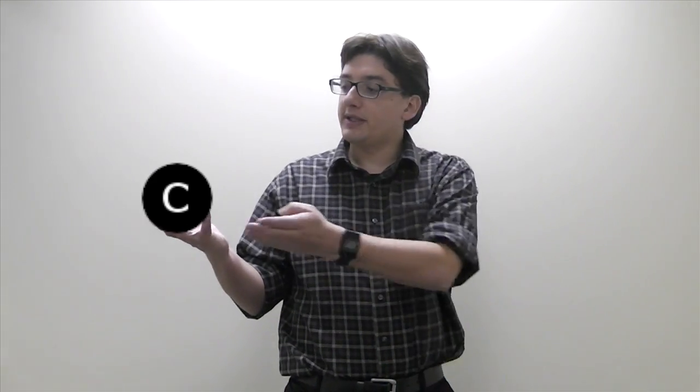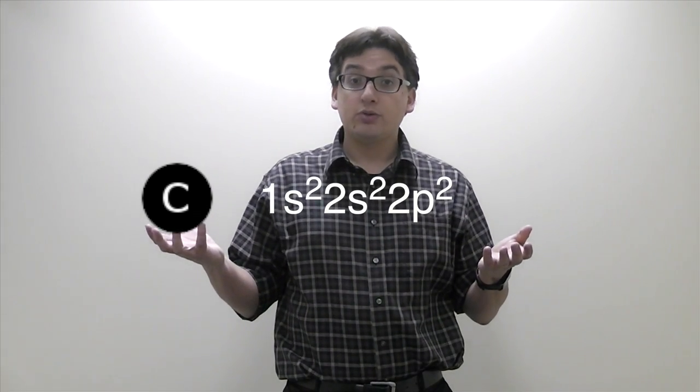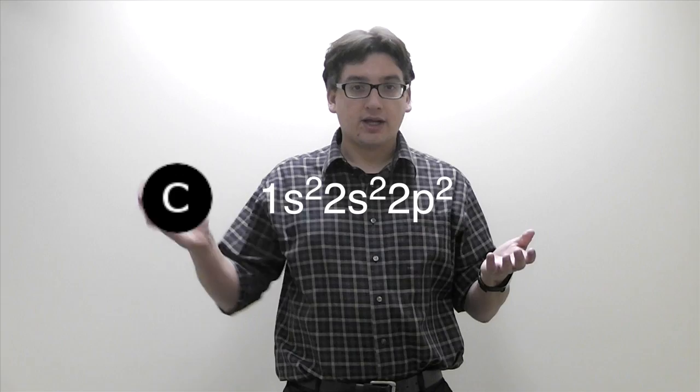So let's take a simple example. Let's look at carbon. Carbon's electron configuration goes 1s2, 2s2, 2p2. Remembering all that? Okay, great.